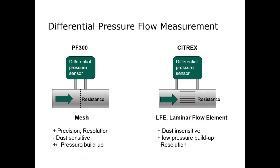When we look at the advantages and disadvantages: the PF300 has very high precision and resolution but it is a little bit dust sensitive. The pressure building up by the flow is a little higher which means it does affect a little bit the measuring chain. On the other hand, Citrix with the laminar flow element is completely insensitive to dust. The pressure buildup is very low but the resolution is a little less, particularly for lower flows.